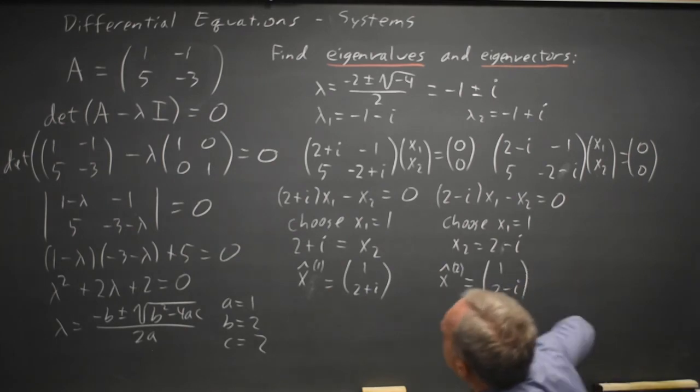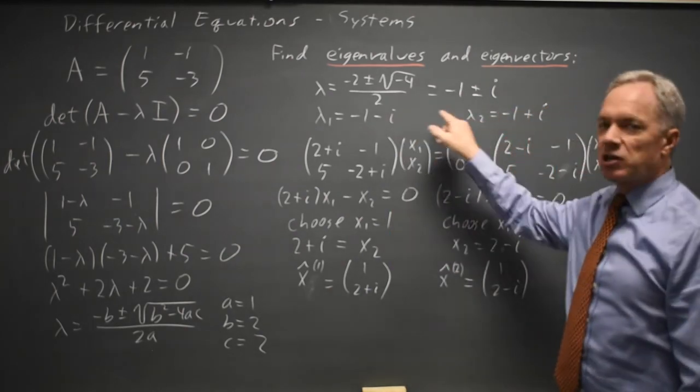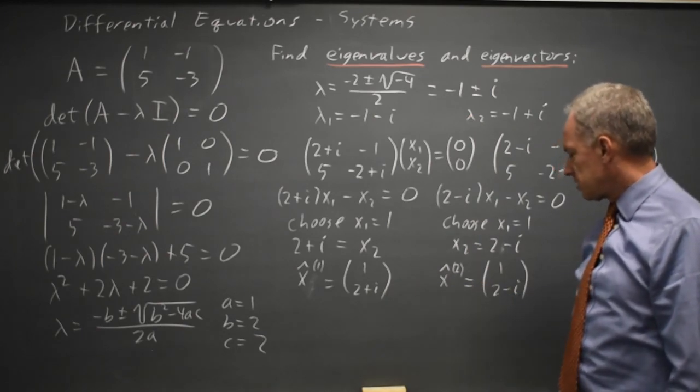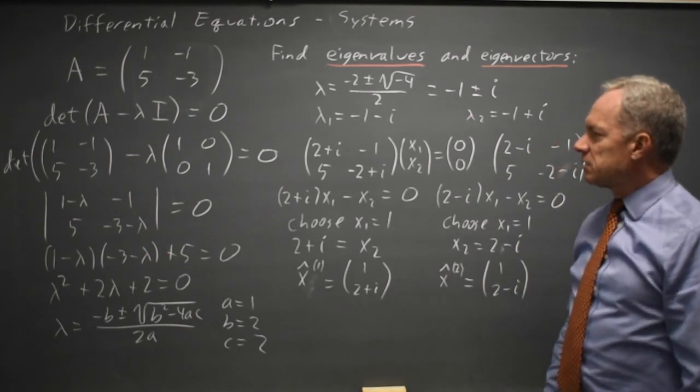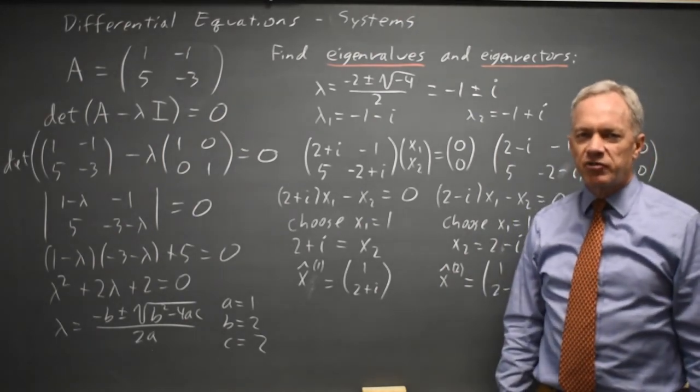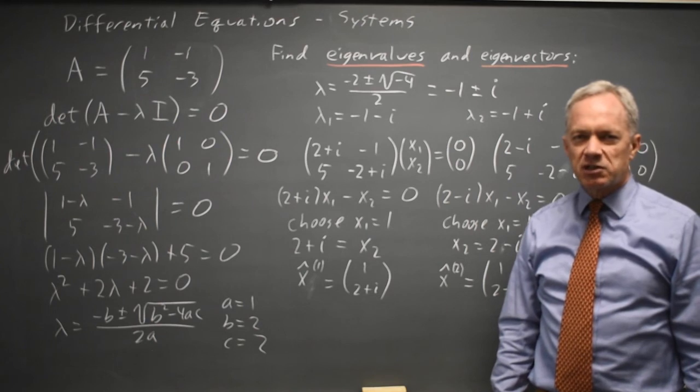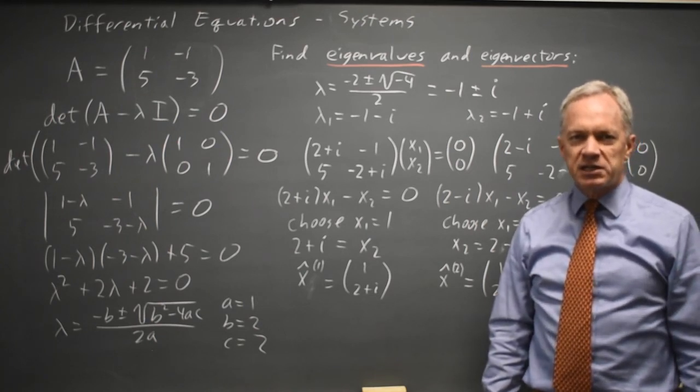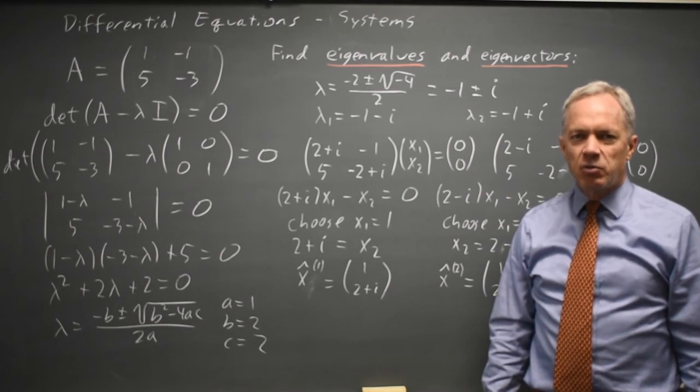And we observe that when our eigenvalues are complex conjugate, the corresponding eigenvectors are also complex conjugate. And I know I said at the start that I'd find the corresponding real vector, but that only applies once I actually have a differential equation. So we'll save that for a later video. Come back soon for my next differential equations video. With math, there's always more.